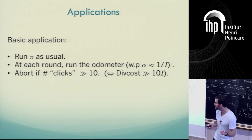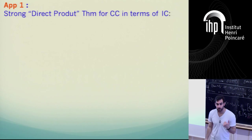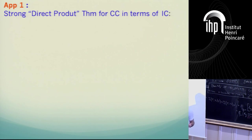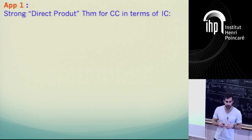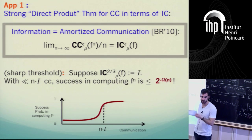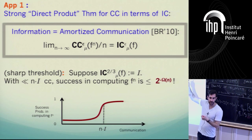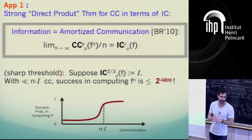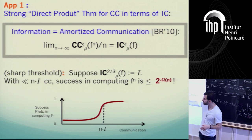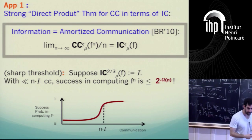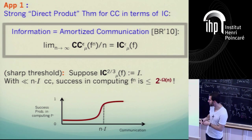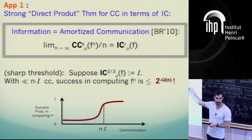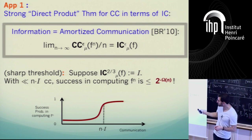Why would we be interested in such a primitive? Let me mention three applications, with maybe five minutes to elaborate on one. The first application: this was one of the motivations for constructing this primitive — proving the sharp threshold result mentioned previously. This primitive was the missing link for proving this result, which is a sequence of two papers, one with Anoop, Mark, and Amir, and the other being this work.